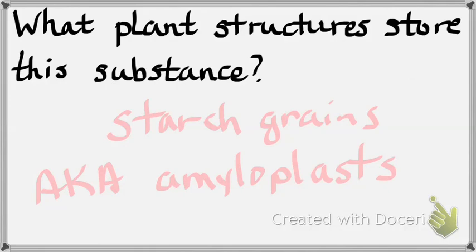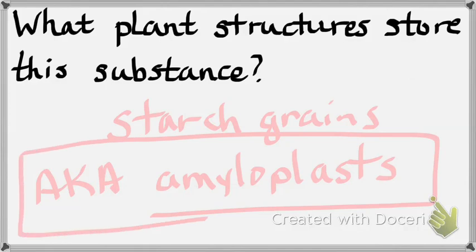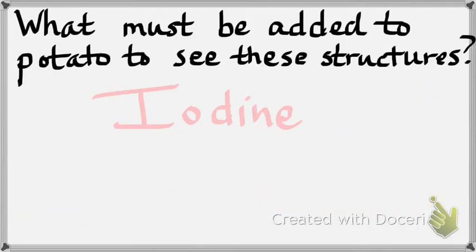We saw starch grains when we made a wet mount of potato. What substance must be added to a potato to see starch grains? Iodine. Number five: what is the common structural glucose polymer in plants? Cellulose. This one is not for energy storage — it's for structure. Plants build cellulose to build their cell wall. What cell part is composed of cellulose? The cell wall.